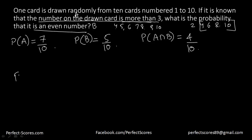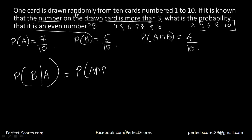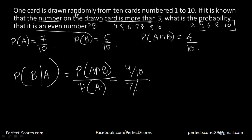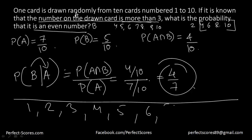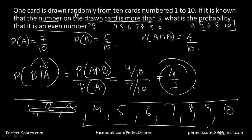The question tells us event A has already occurred — the card drawn is more than 3. So we need to find the probability that event B occurs given event A. That equals P(A∩B) divided by P(A), which is 4/10 divided by 7/10, equal to 4/7. Logically: since event A occurred, remove 1, 2, and 3 — leaving 4, 5, 6, 7, 8, 9, 10 (7 numbers). Of these 7, the even ones are 4, 6, 8, 10 — that's 4. So the answer is 4/7.